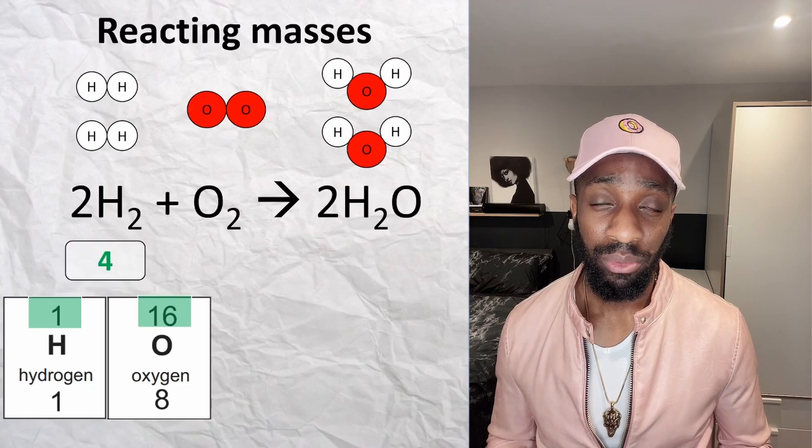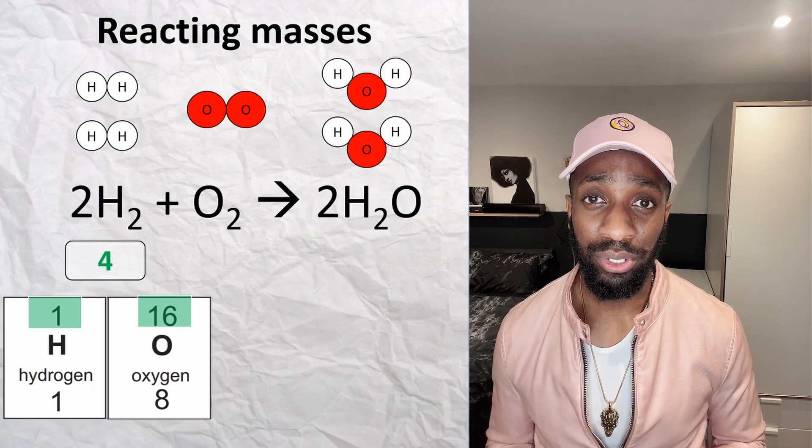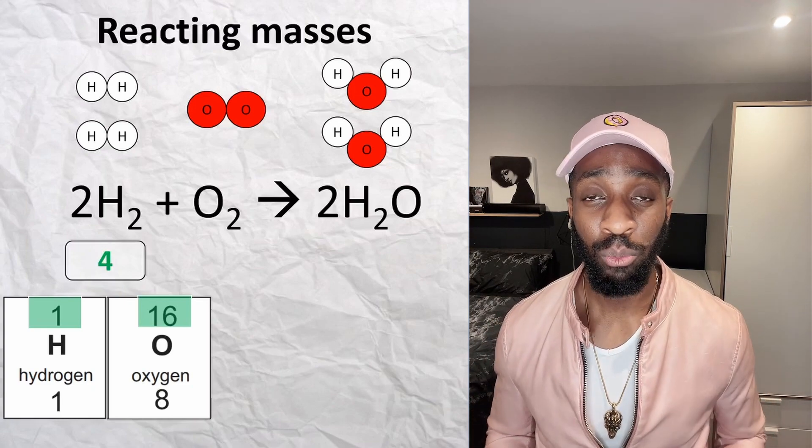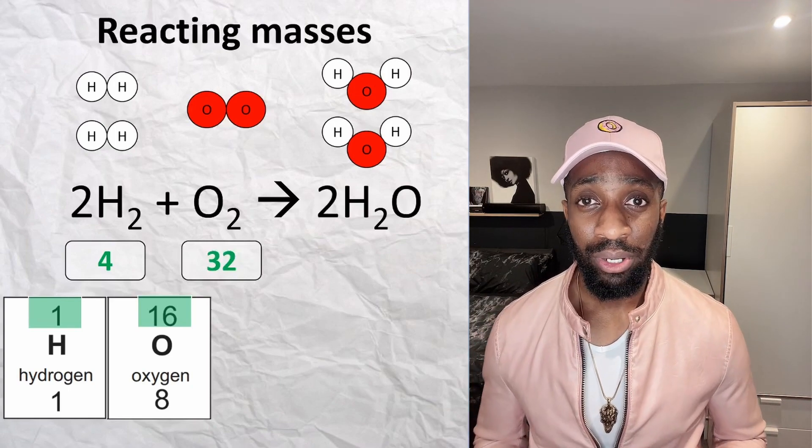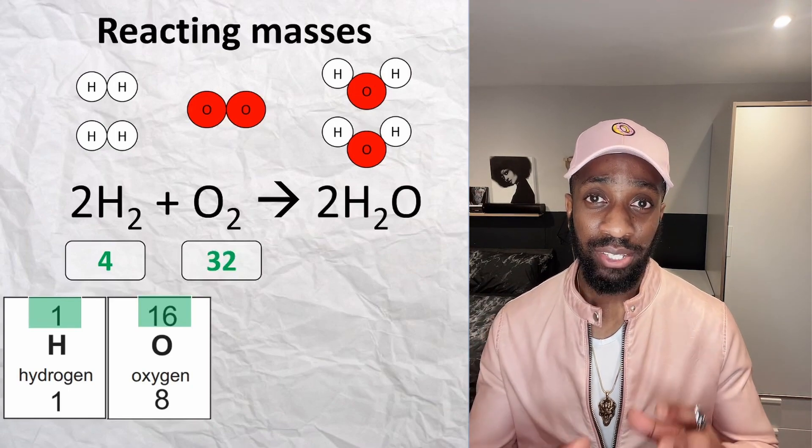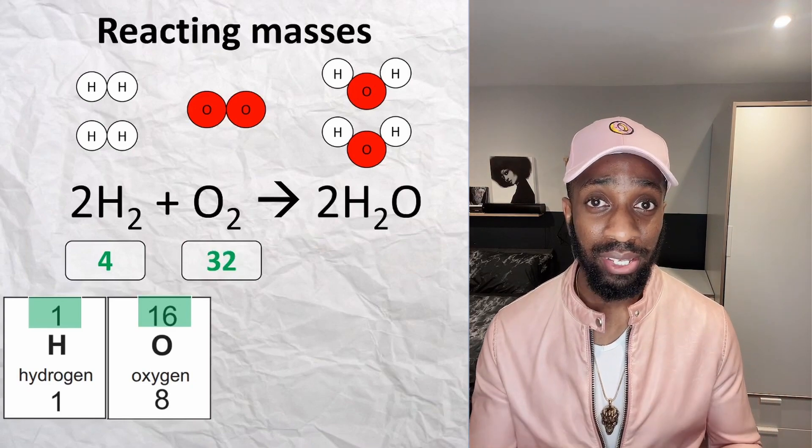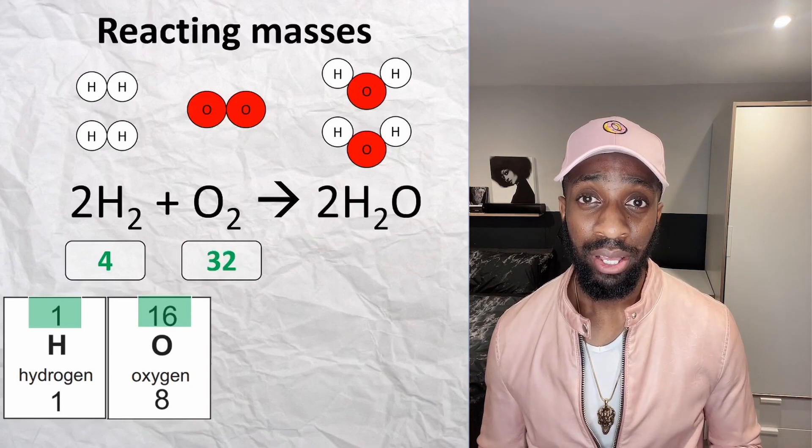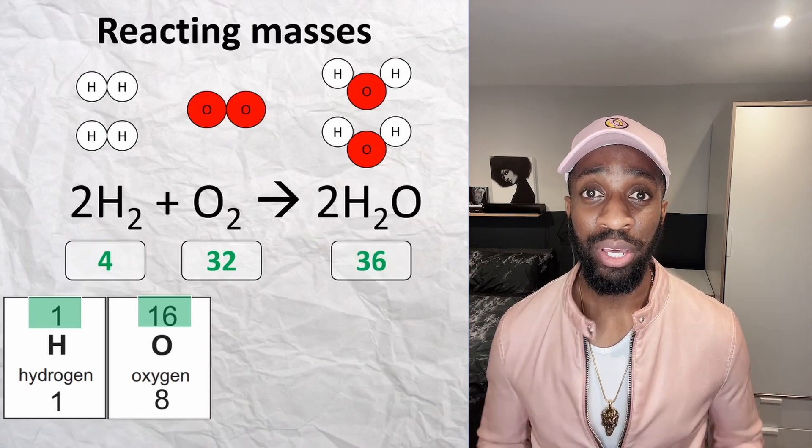Doing the same for oxygen, which has a RAM of 16, so that's 2 times 16 which gives us 32. And water H₂O has a relative formula mass of 18, but we've got two moles of that, so 18 times 2 gives us 36.